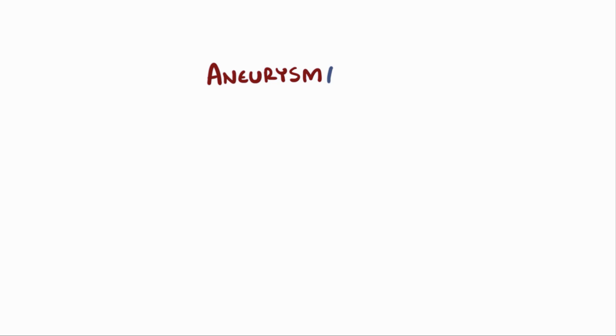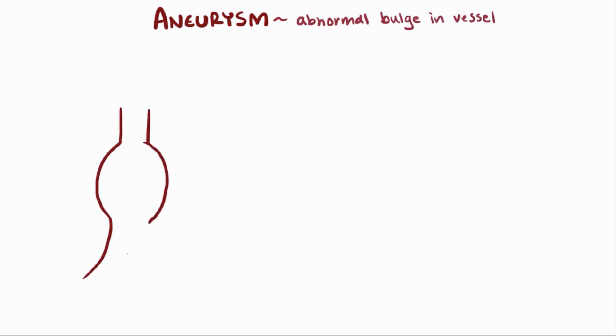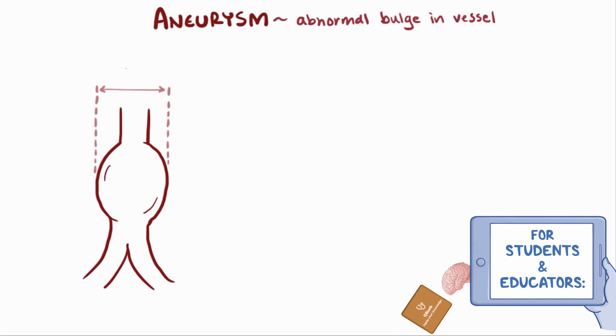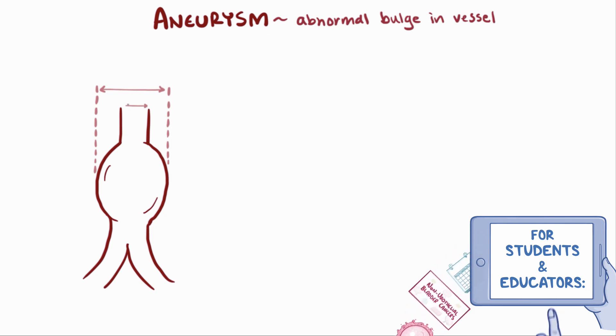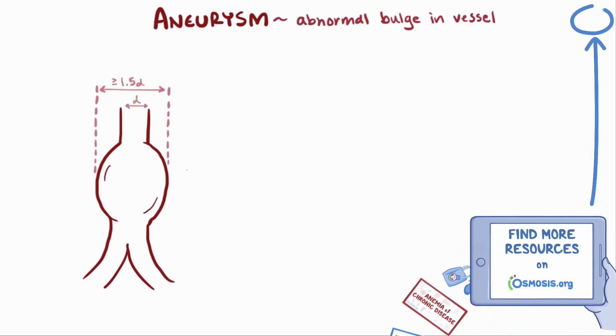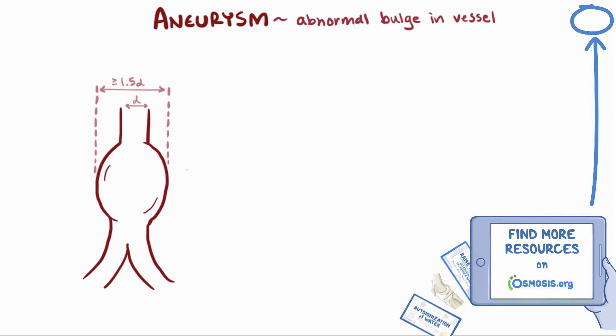The word aneurysm is based off the Greek word aneurysma, which means dilation, and that makes sense because aneurysms are abnormal dilations in a blood vessel. We officially label a bulge in a blood vessel as an aneurysm when the diameter of that bulge is about one and a half times larger than the normal diameter of a blood vessel.